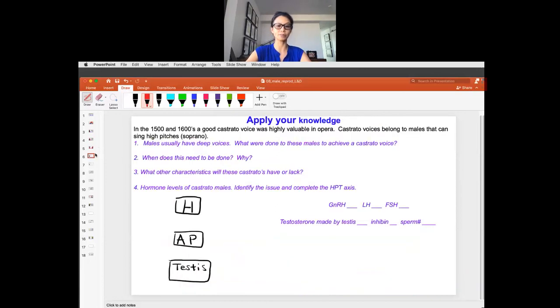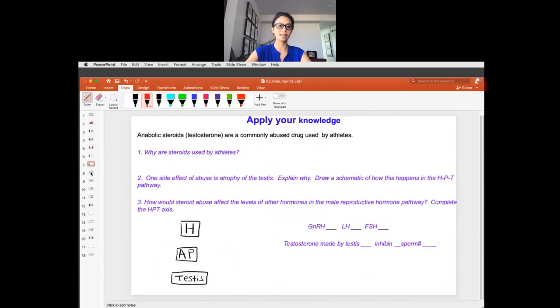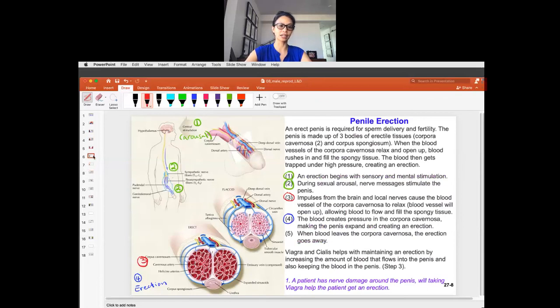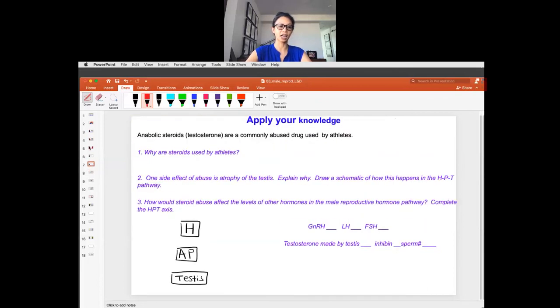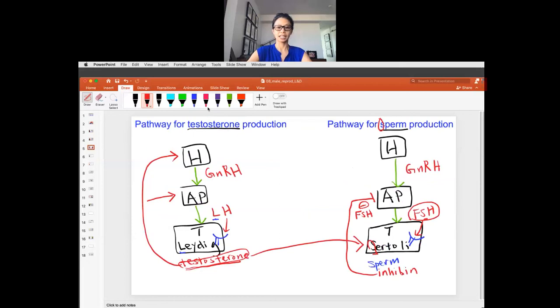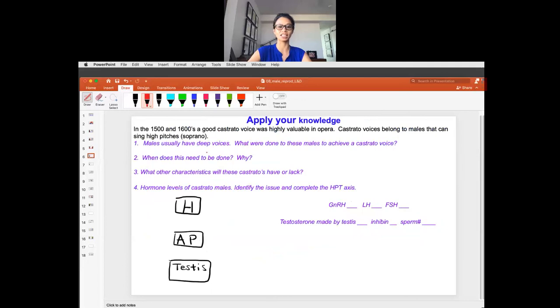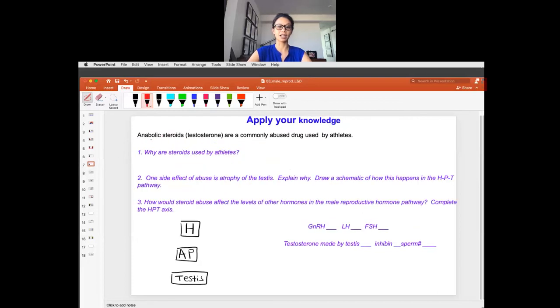So practice those pathways, draw them in your journal, write them down step by step, and hopefully you can understand how the pathway works. And then using this understanding for the pathway, then apply it to two application problems. One is the castrato male, thinking about how that happened in the 1500s and 1600s. And then one is anabolic steroid abuse, where testosterone is used by athletes in sports. Okay. So this is male hormone pathway. Thank you.